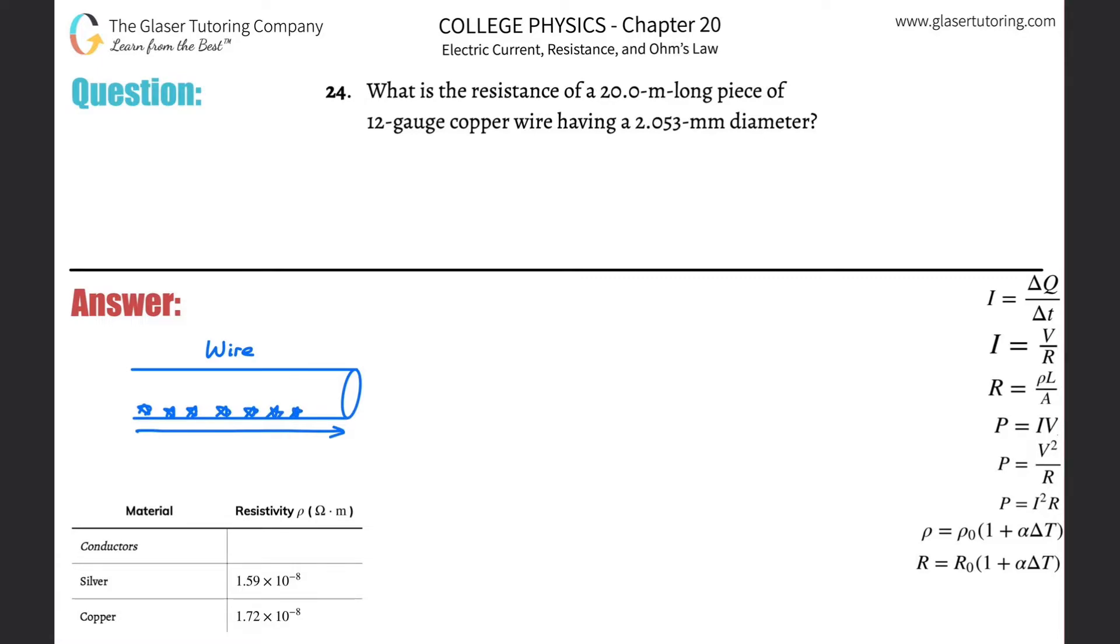So the longer the wire gets, the more resistance there should be. And the third thing that will influence the resistance is going to be the nature of the material itself that comprises the wire.